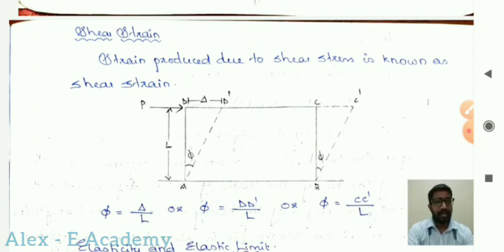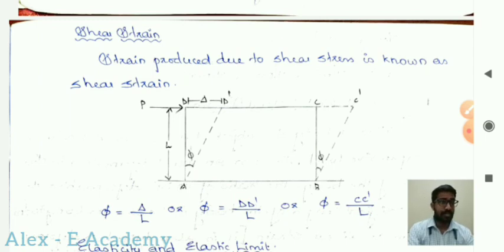Shear strain is defined as delta divided by length, where delta means the change in position divided by the original length.